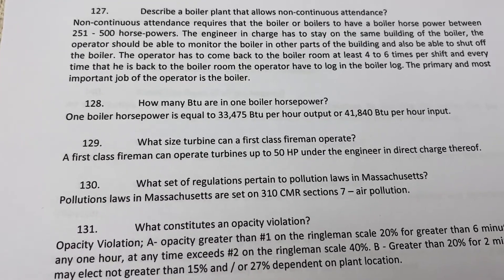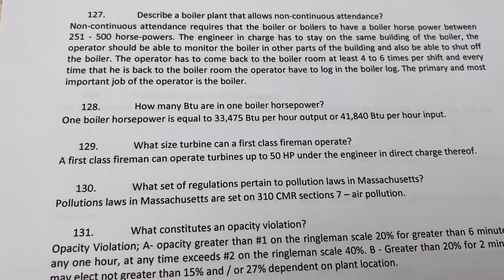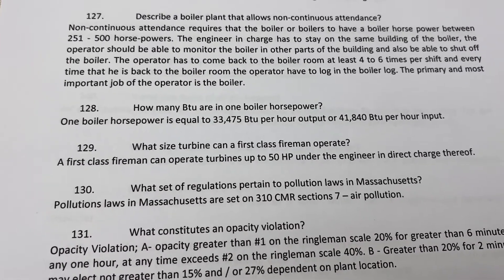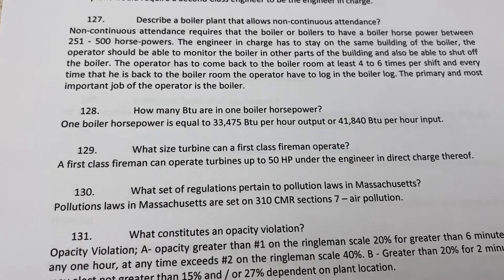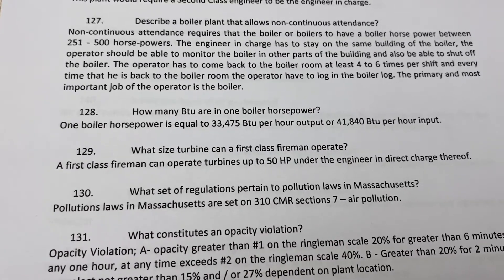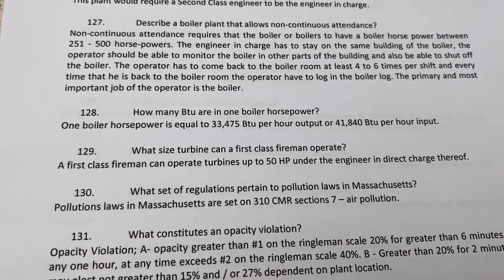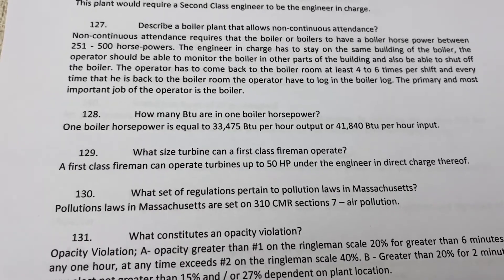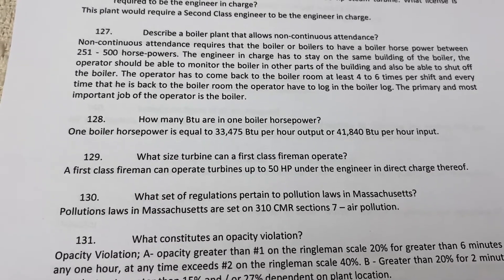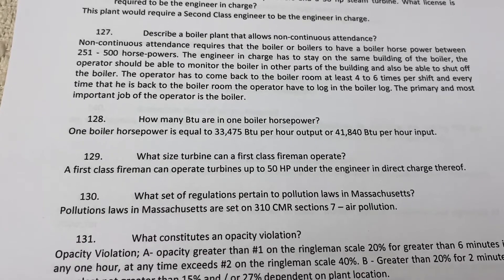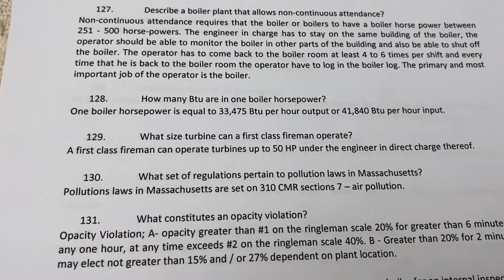How many BTUs are in one boiler horsepower? One boiler horsepower is equal to 33,475 BTU per hour output, or 41,840 BTUs per hour input.